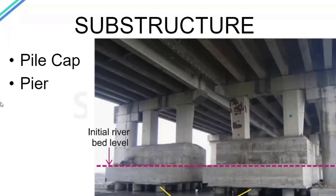These pile caps have to be designed as very rigid bodies so they can take all the loads, rotations, and displacements from the piers without getting damaged. On top of that we see the pier cap, and on top of the rectangular piers we have a pier cap on which the eye girders are resting. As a designer, we need to design all of these components: the girders, pier caps, piers, pile caps, piles, and the bearings that transfer the load.